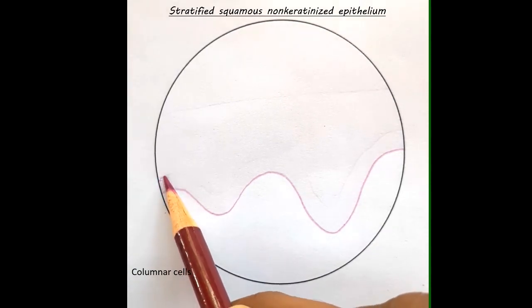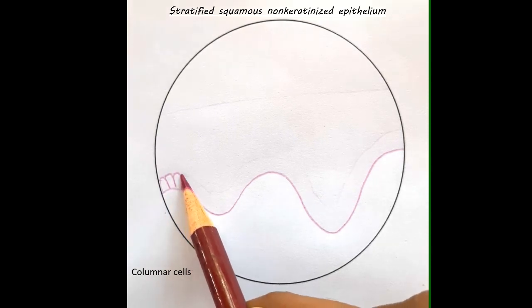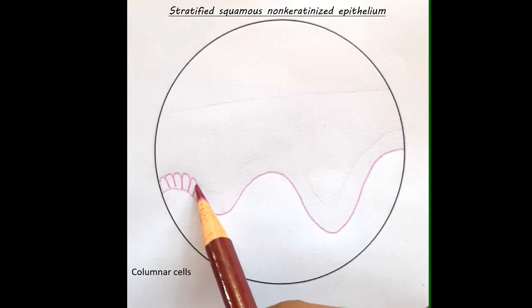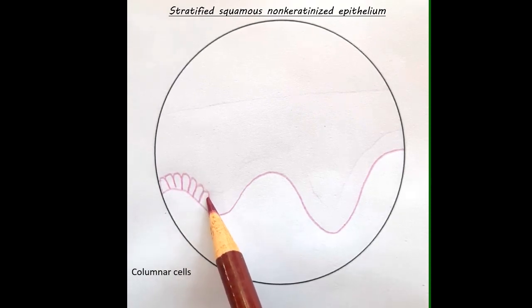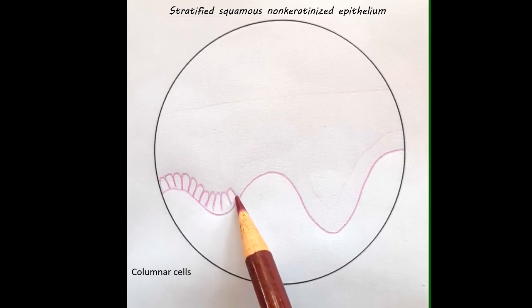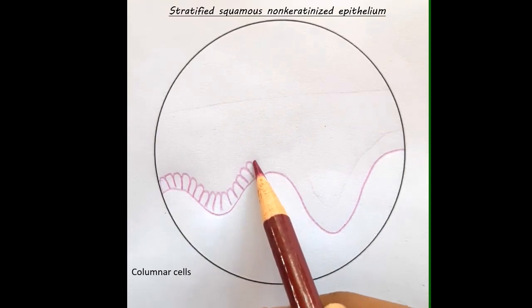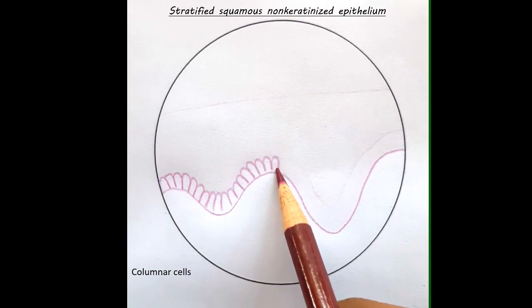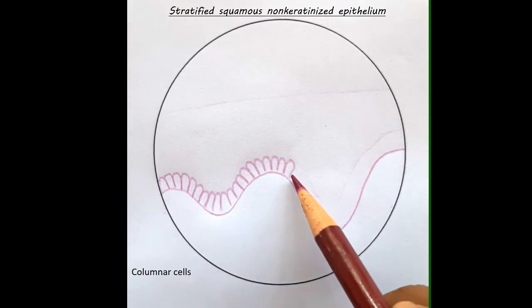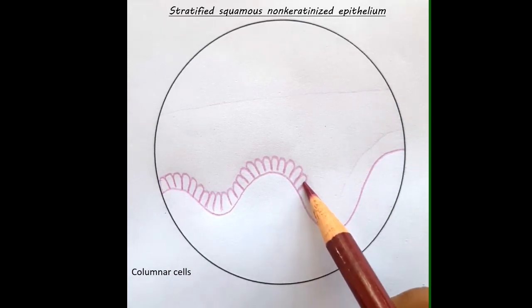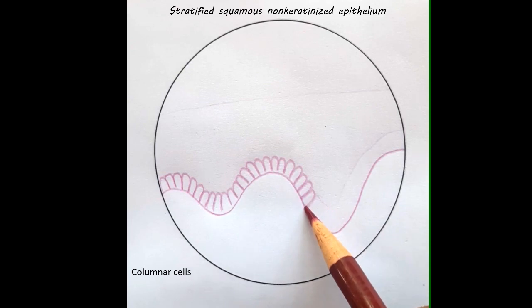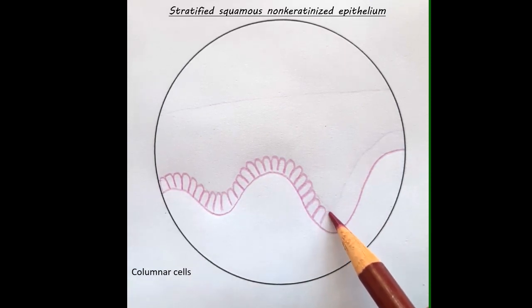Now the columnar cells can be drawn like this, with the apical surface touching the upper reference line and the basal surface touching the basement membrane. When we reach these curves, that is where it gets a little tricky, where the shape of our columnar cell can get distorted. But just keep drawing. Make sure that the base touches the basement membrane.